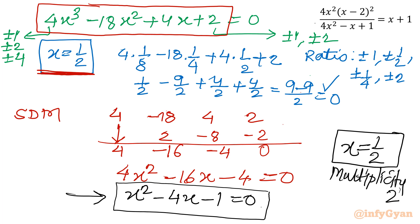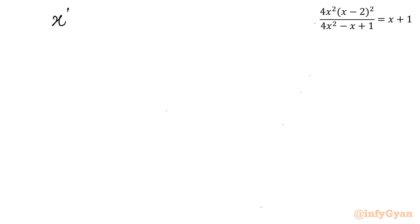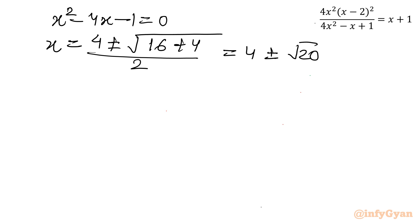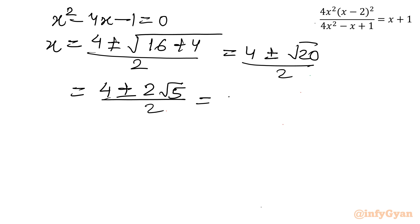Now finding the remaining two solutions from x² minus 4x minus 1 equals 0 using the quadratic formula: x equals minus b, which is 4, plus or minus the square root of b² minus 4ac, so 16 plus 4, divided by 2a which is 2. This gives 4 plus or minus the square root of 20, over 2, which simplifies to 4 plus or minus 2 root 5, over 2, and finally x equals 2 plus or minus root 5.